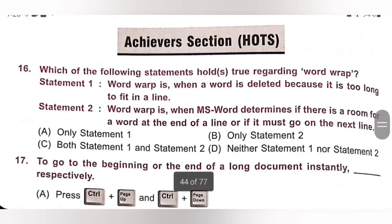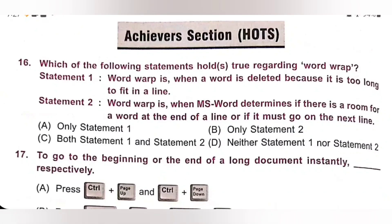Question 16 — Achiever section: Which of the following statements holds true regarding word wrap? Statement 1: Word wrap is when a word is deleted because it is too long to fit in a line — this is false. Statement 2: Word wrap is when MS Word determines if there is room for a word at the end of a line or if it must go on the next line — this is true. Only statement 2 is true. Option B is the correct answer.